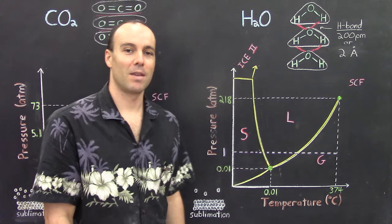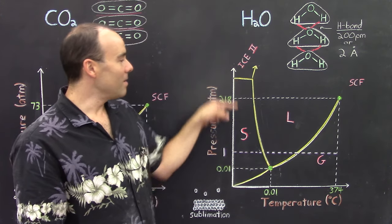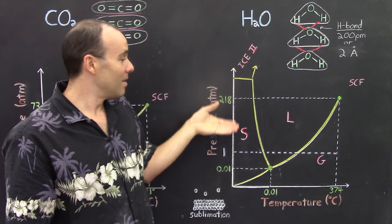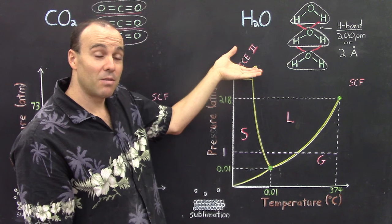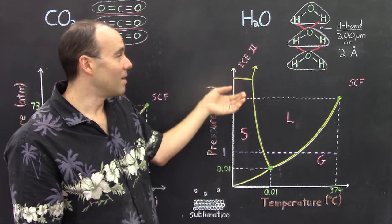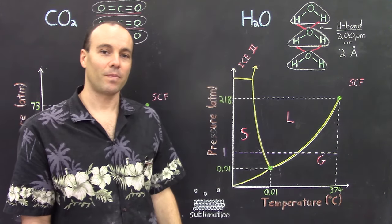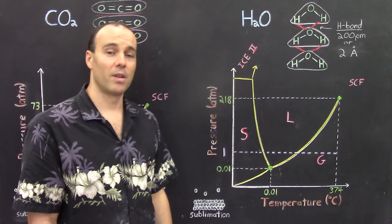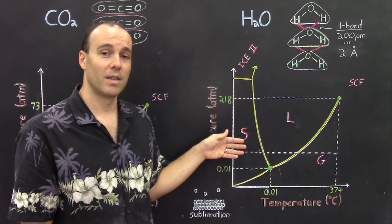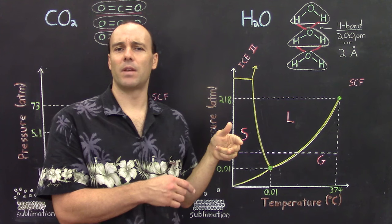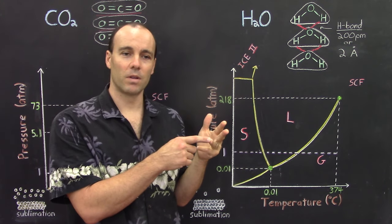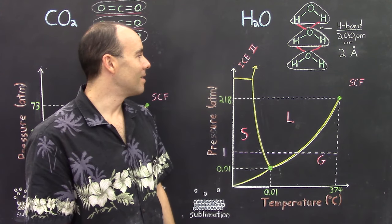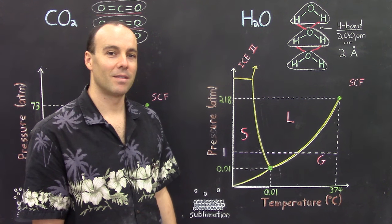One more interesting thing regarding water: way up at extremely high pressures of several hundred atmospheres, solid water takes on a different type of configuration — a different structure — and you call that ice 2. We are not going to look at the molecular structure of ice 2, but it is different than regular ice. And at even higher pressures, there are even other structures: ice 3, ice 4, ice 5, and so on.